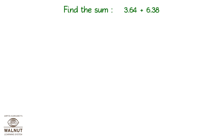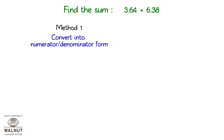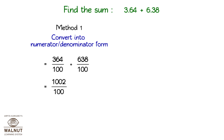Find the sum 3.64 plus 6.38. Method 1: Convert into numerator over denominator form. 364 over 100 plus 638 over 100 equals 1002 over 100, which equals 10.02.